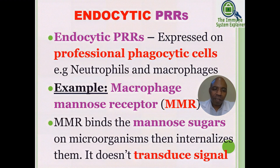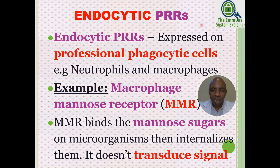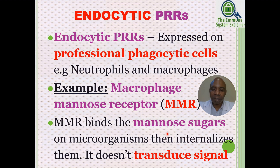Endocytic PRRs are expressed on professional phagocytic cells — examples include neutrophils and macrophages. An example of an endocytic PRR is the macrophage mannose receptor (MMR). MMR binds to mannose sugars on microorganisms, helping to recognize PAMPs, but they do not transduce a signal into the cell.